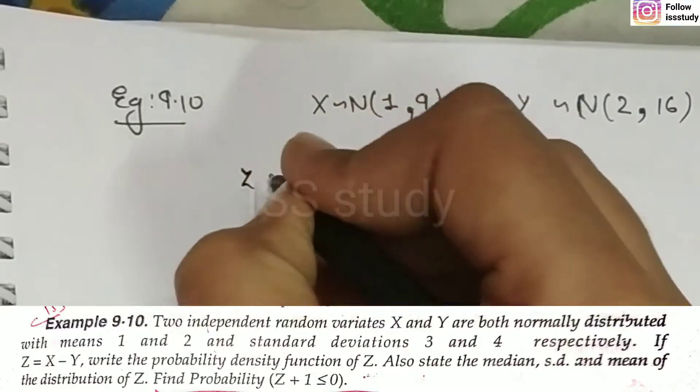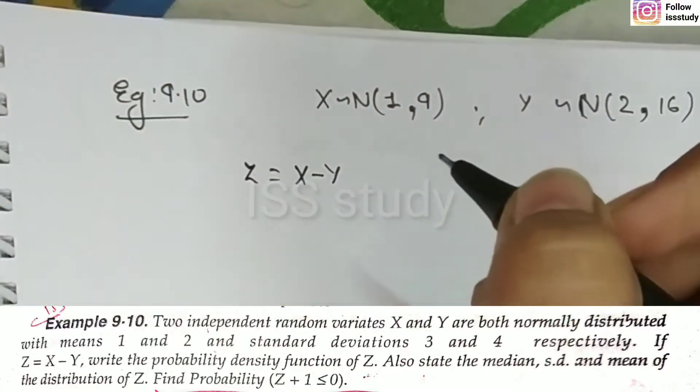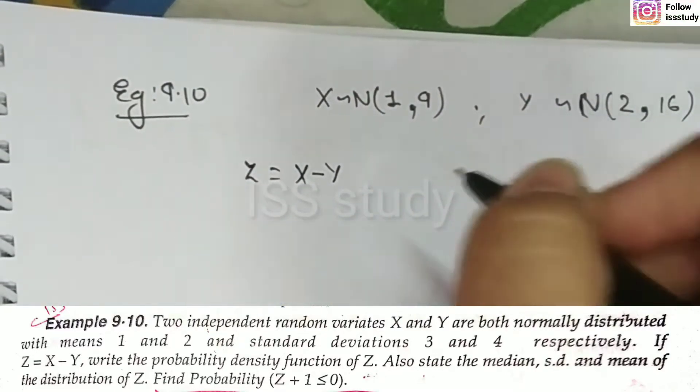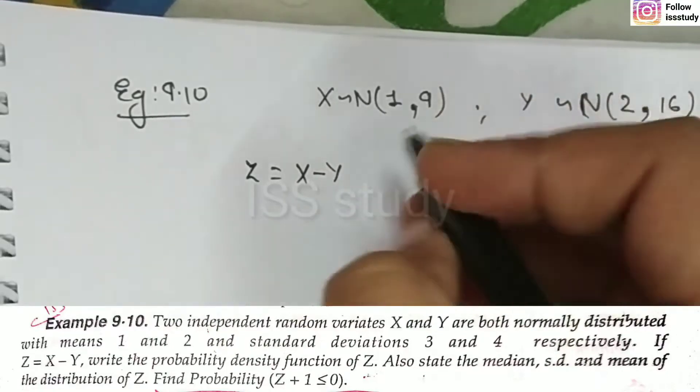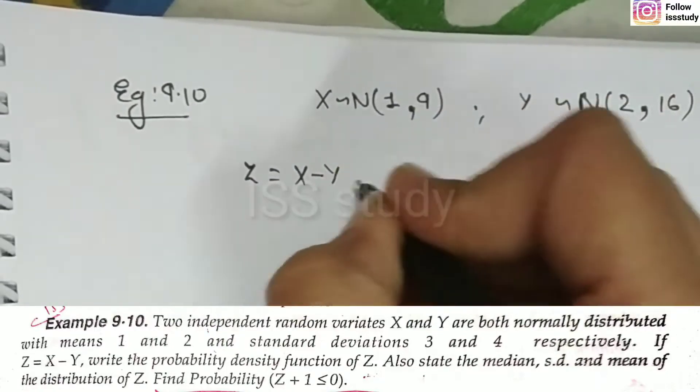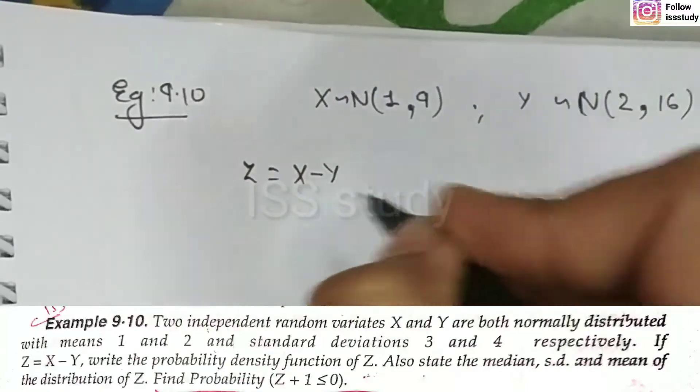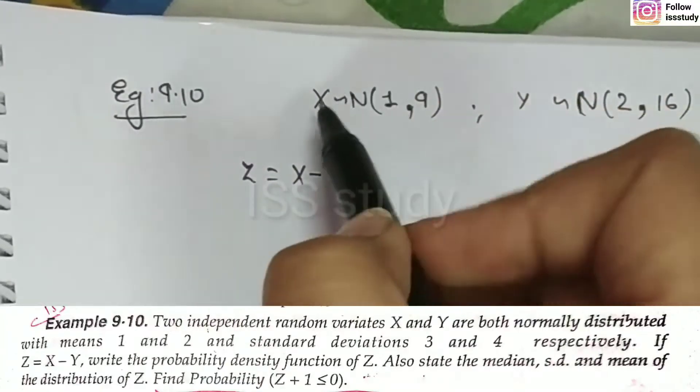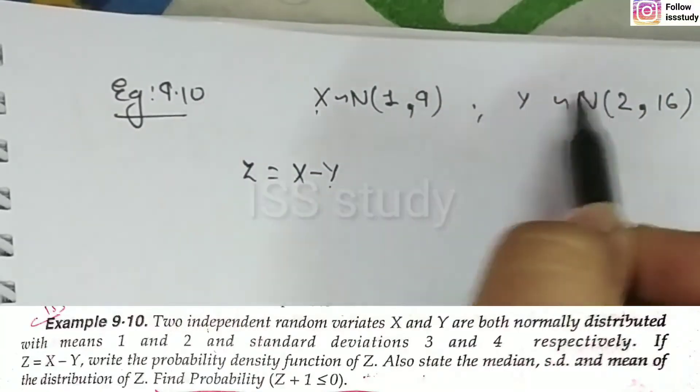If z is equal to x minus y, write the probability density function of z. Then, we need to know probability density function of z. So, we can easily explain that. Now, how can we tell you? Because we know both distributions of x and y.